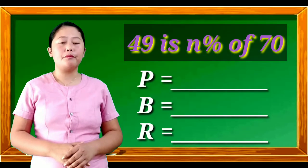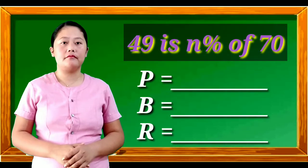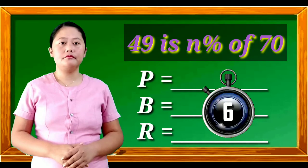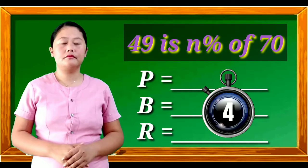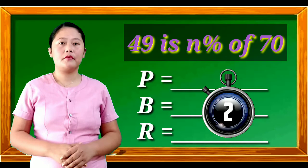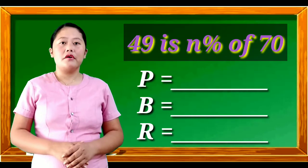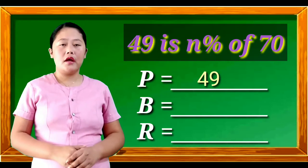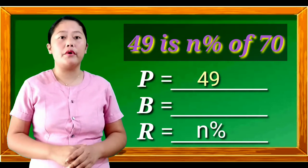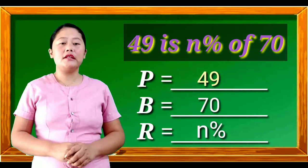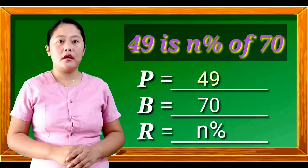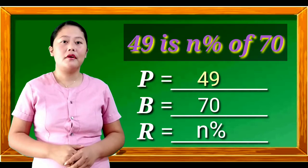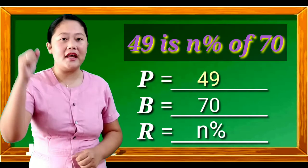49 is N percent of 70. So, 49 is our percentage. N% is our rate. 70 is our base. Did you get the same answer? Well, excellent!